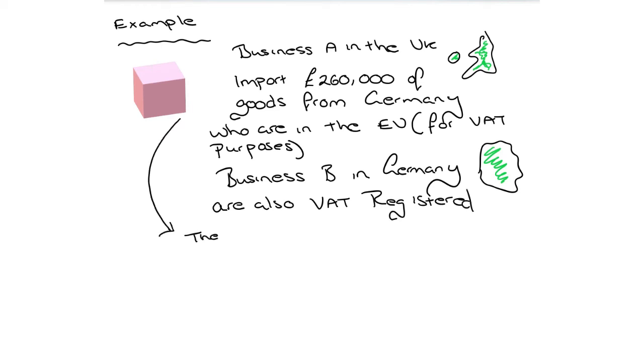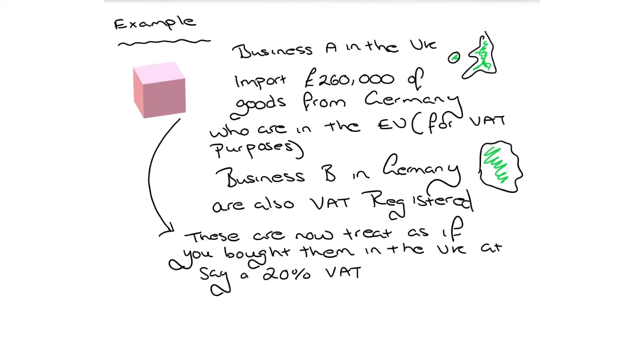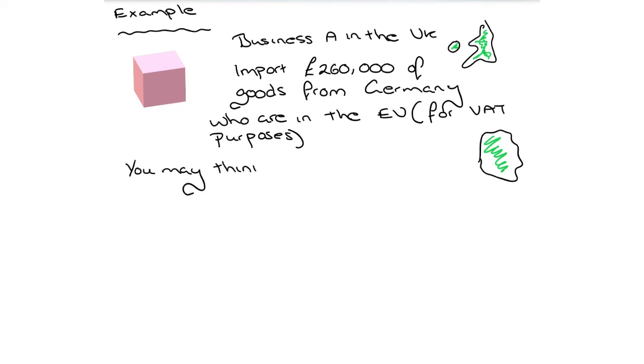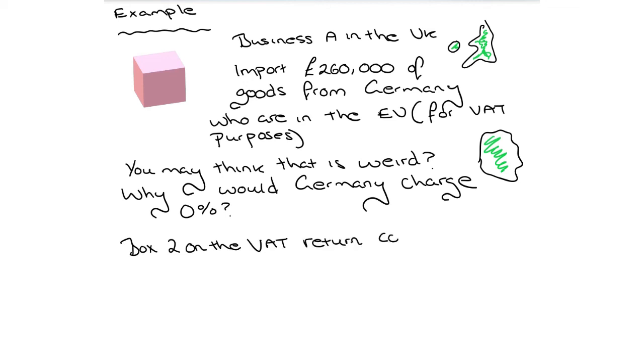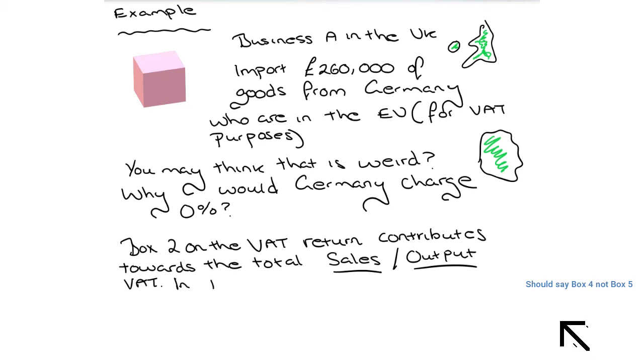So those purchases, those goods, are now treated as if you bought them in the UK at, say, 20% VAT rate. The German business, however, will charge you no VAT or 0%. So you might think that this is weird, and you might be asking yourself, well why would Germany charge 0%? Now this is because box 2 on the VAT return contributes towards total sales or output VAT. So you've got this figure, this VAT, on the £260,000.